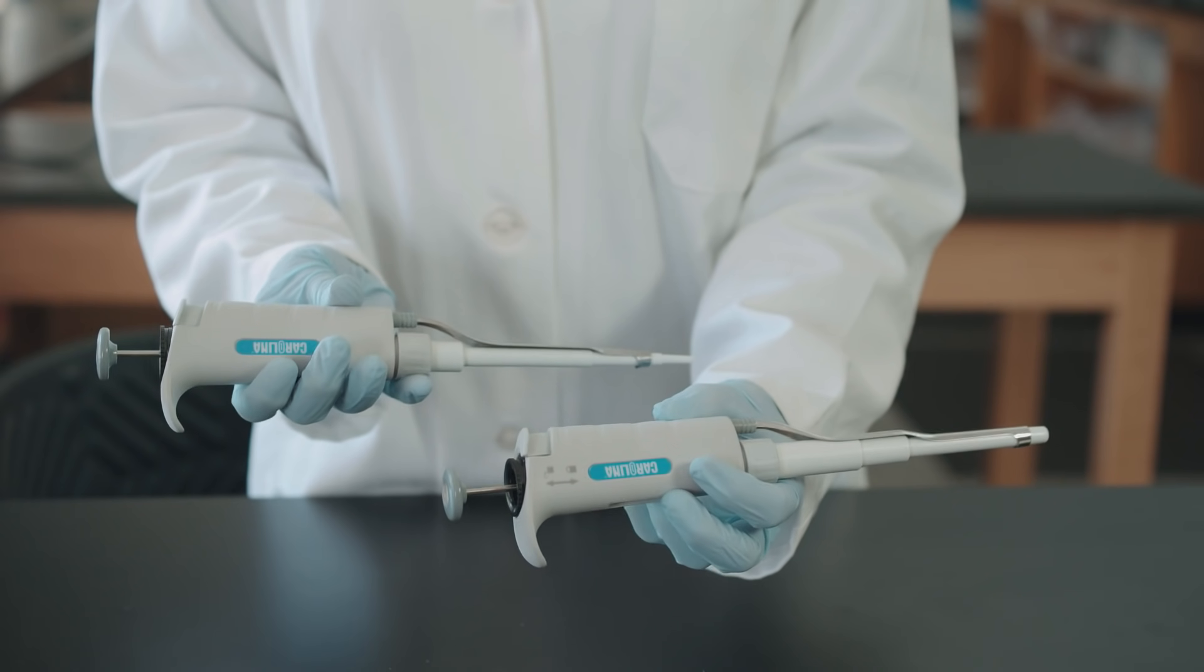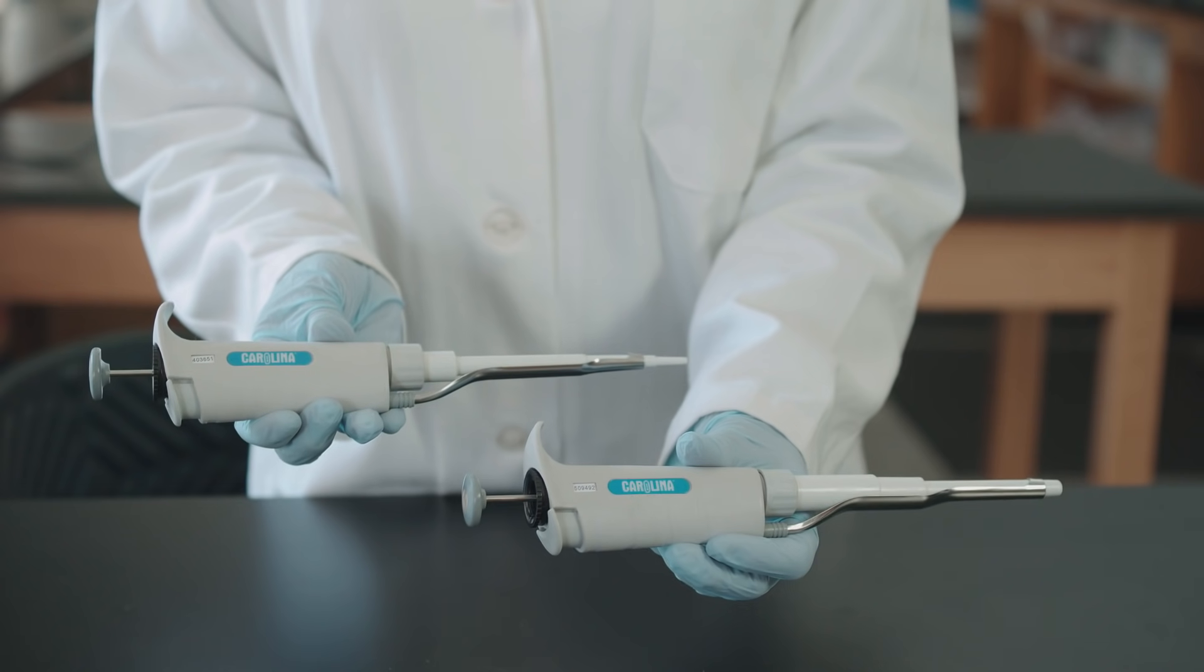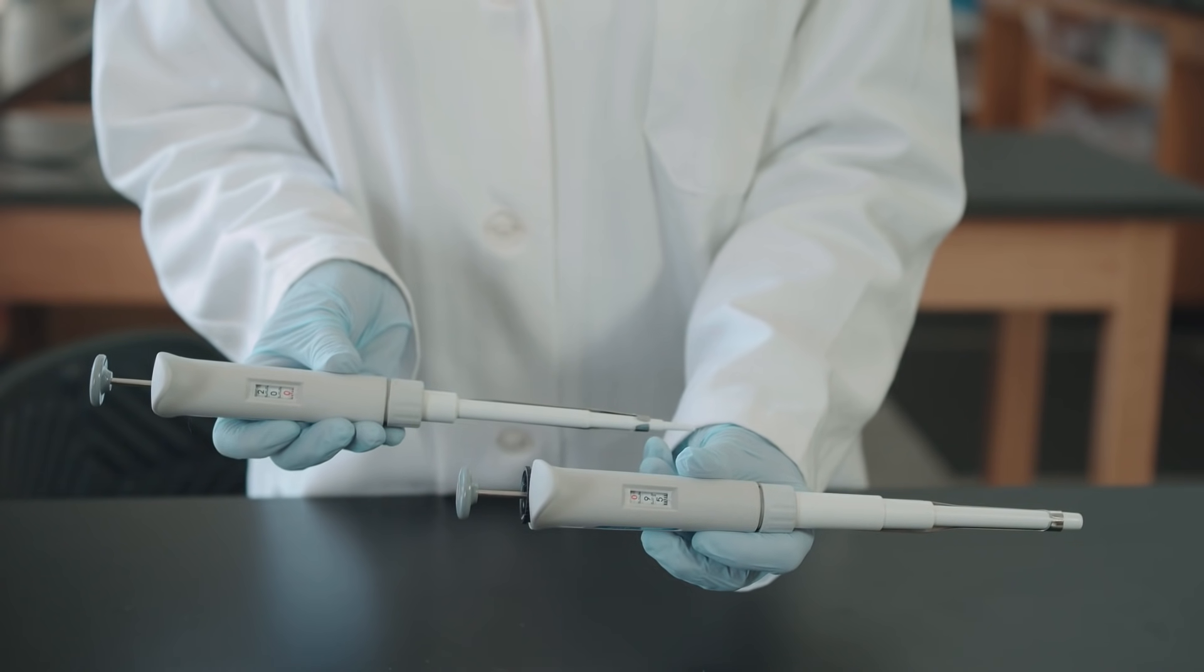Micro pipettes are used to measure small volumes, usually volumes smaller than a milliliter. There are different types of micro pipettes for measuring different ranges in volume.